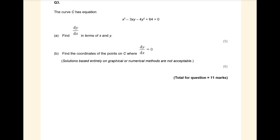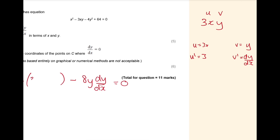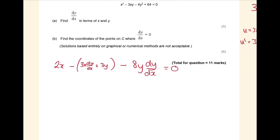Implicit differentiation - it didn't show up, but it's going to show up. I can guarantee it. So you differentiate the x terms normally. I'm going to differentiate 4y² to get 8y(dy/dx), and the 64 gets differentiated to 0. Now doing the product rule for 3xy: let u = 3x, v = y, so u' = 3, v' = dy/dx. Multiplying those together: I get 3x(dy/dx) + 3y. Make sure you put your brackets, otherwise you're going to make mistakes.